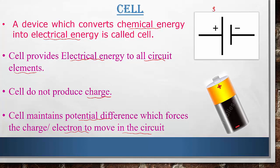This is the symbol of the cell — this is the positive terminal and this is the negative terminal. Don't get confused between cell and battery; both are the same, but if there is more than one cell then we call it a battery. This is the positive terminal of the cell and this is the negative terminal.